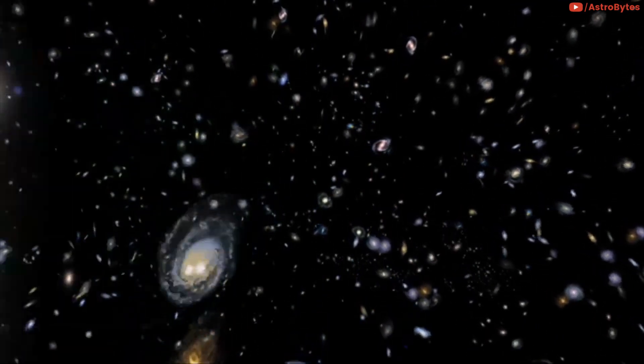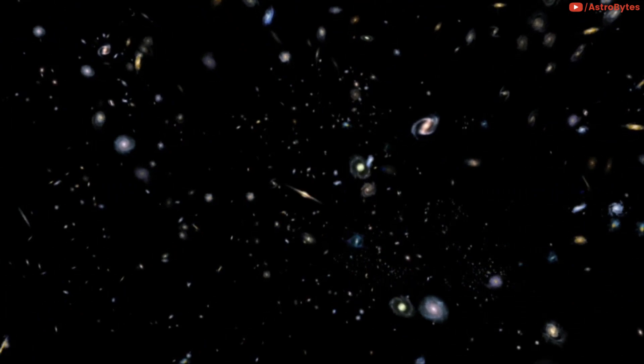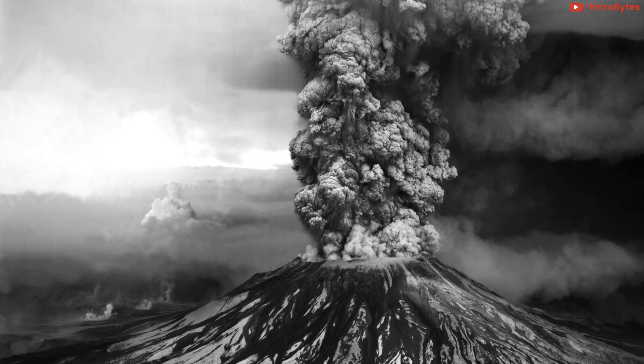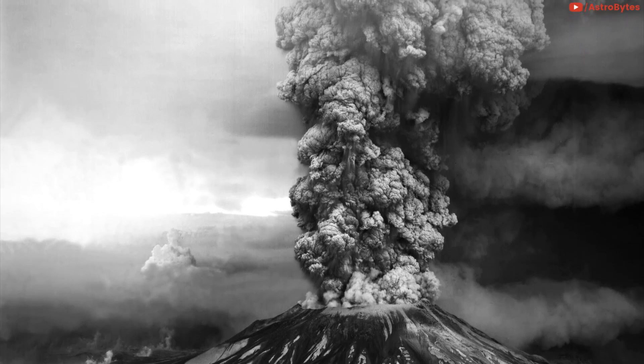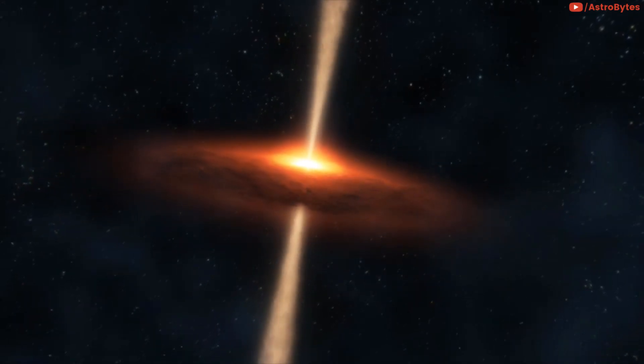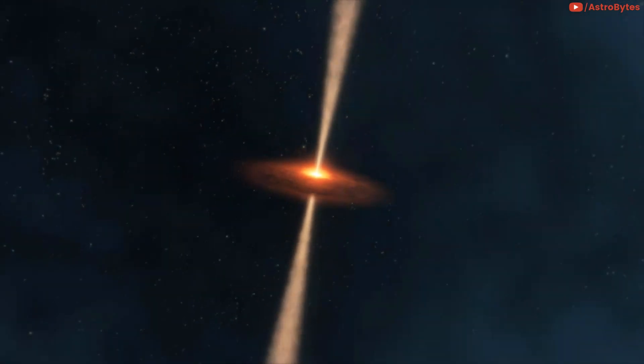Simona Giacintucci, the lead author of the study, described the blast as an astronomical version of the eruption of Mount St. Helens in 1980, which ripped off the top of the volcano. A key difference is that you could fit 15 Milky Way galaxies in a row into the crater this eruption punched into the cluster's hot gas.